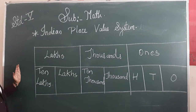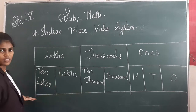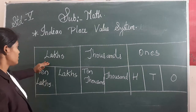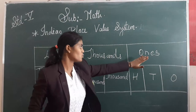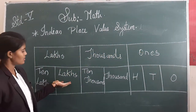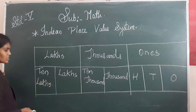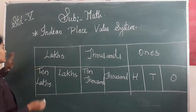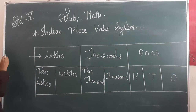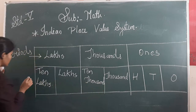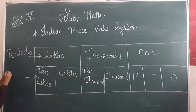Now we will see the place value system up till lakhs. You can see I have made columns where I have written: ten lakhs, lakhs, ten thousand, thousand, hundred, and ones. What I have written on the top are called periods, and what I have written down are place values.